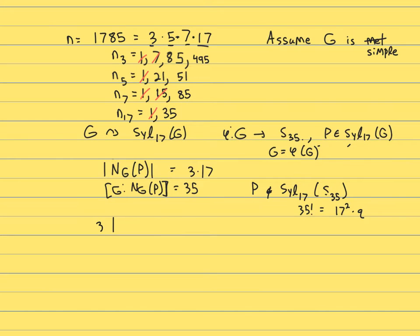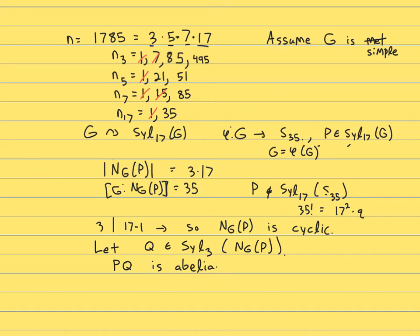What do we know about groups of order 3 times 17? Well, 3 does not divide 17 minus 1. So this group is cyclic. In our classification of groups of order p times q, this is one of those cases. It must be a direct product. And direct product of distinct primes, these are cyclic groups. That's isomorphic to cyclic group itself. We've been focusing on 17, so let's focus on 3.